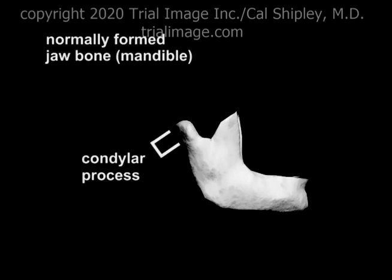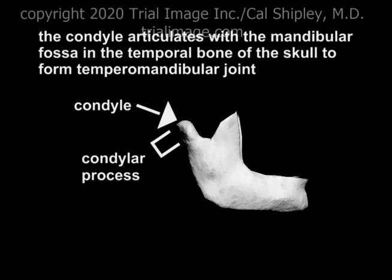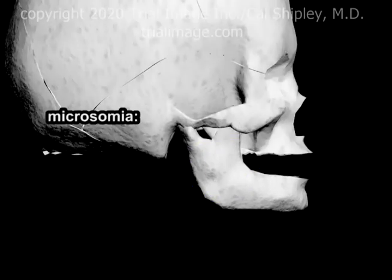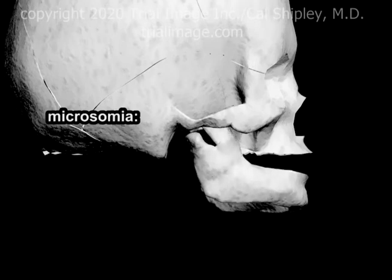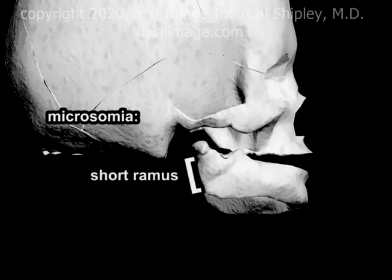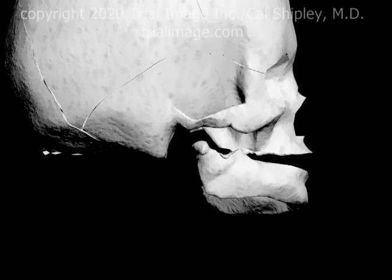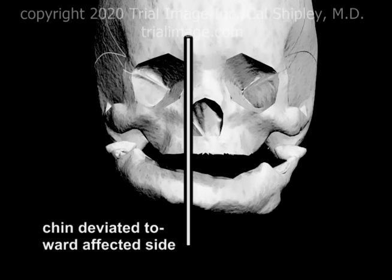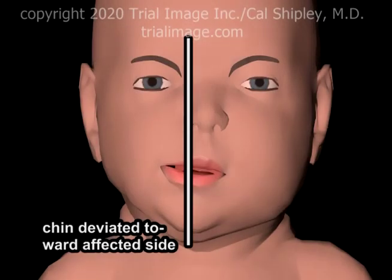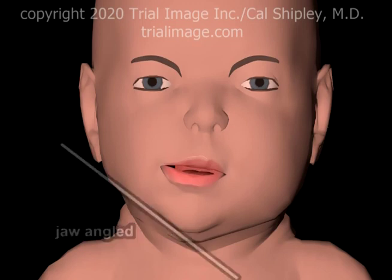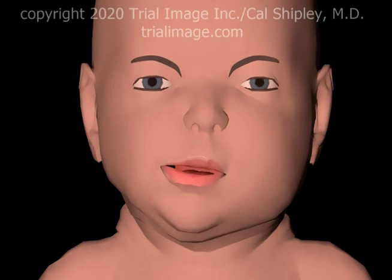At the tip of the condylar process of the mandible is the condyle, which articulates with the mandibular fossa of the temporal bone to create the temporomandibular joint. The ramus connects the condylar process with the lower half of the mandible. In microsomia, the condylar process and ramus are underdeveloped and smaller than normal, resulting in angling of the jaw with deviation of the chin toward the affected side, giving the child the characteristic appearance of hemifacial microsomia.